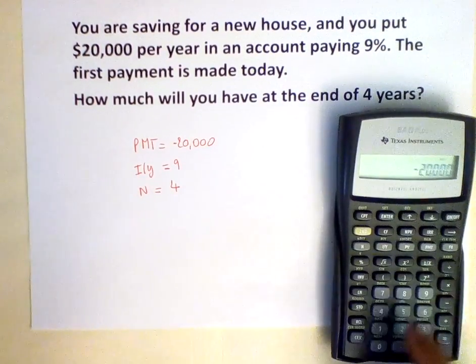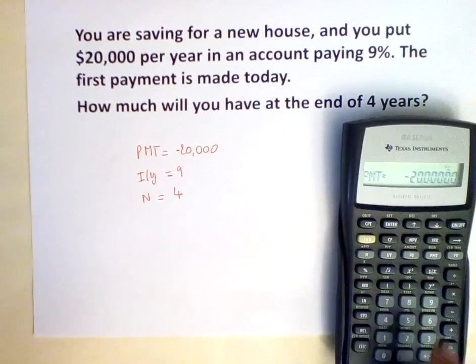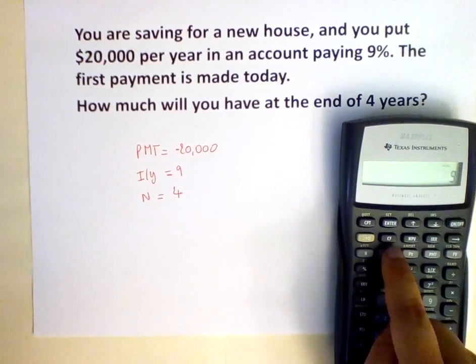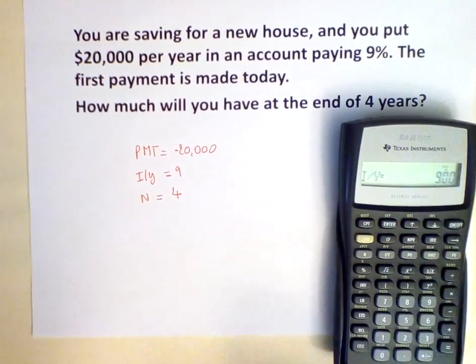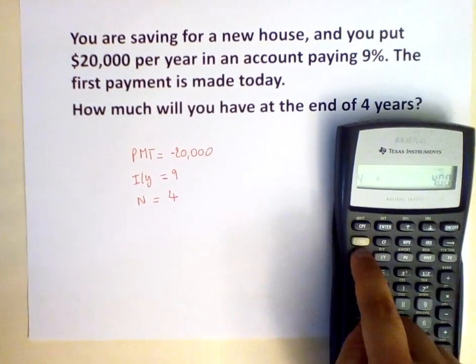Negative 20,000 is the PMT, so we hit the PMT button. 9 is the interest rate, so we hit the I over Y button. 4 is the number of years we are investing, so we hit the N button.